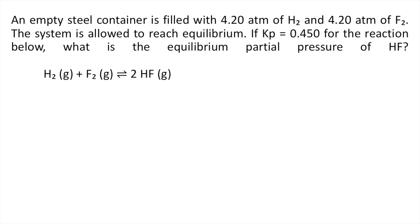In this problem we are also given the balanced equilibrium reaction. The first thing you're going to do is make an ICE table. I stands for initial. In the problem, we are given the initial pressures of H₂, which is 4.20 atm, and the initial pressure of F₂ is also 4.20 atm. For the product HF, this is still the initial stage of the reaction, meaning nothing has happened yet — so you just have the reactants. The product would be 0.